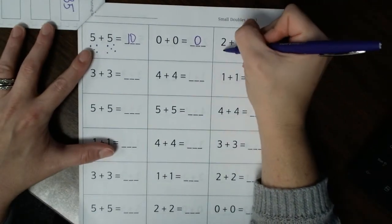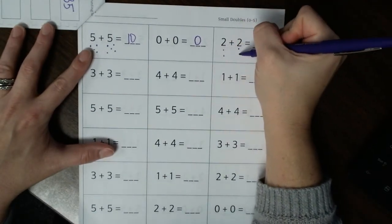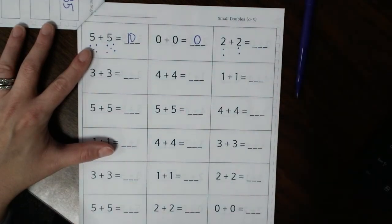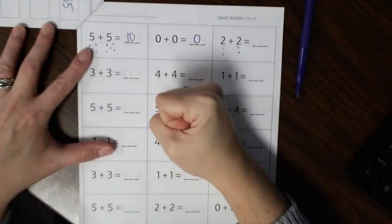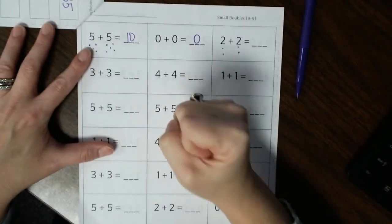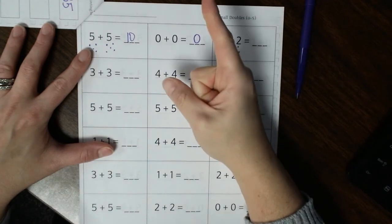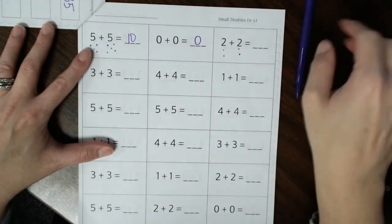2 plus 2, you can either draw two dots and count your dots. Or you can do the strategy where you hit your number. So you hit 2, and then you go up 2, so you count forward 2, so 2, 3, 4.